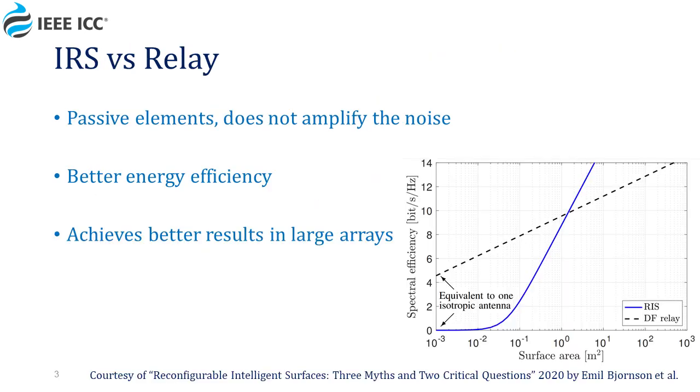When we want to compare the IRS with a DF relay that decodes and retransmits the signal, we can see in the figure taken from Professor Bjornsson's paper that while for small surfaces the DF achieves more successful spectral efficiency, as the surface area increases, the IRS spectral efficiency exceeds the DF's one.